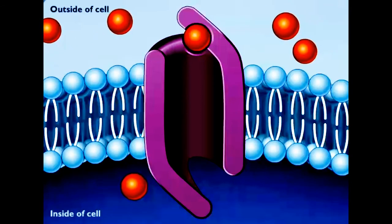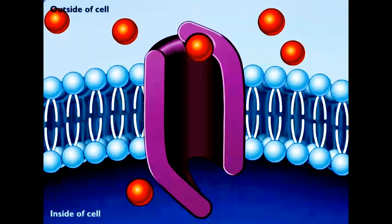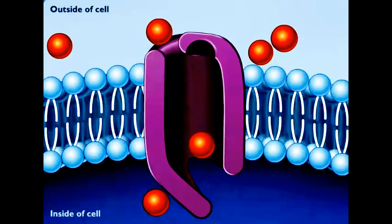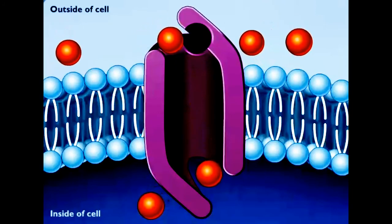Once the molecule binds to the carrier protein, this protein helps or facilitates the diffusion process by changing shape and moving the molecule down its concentration gradient through the membrane into the cell where it is released.